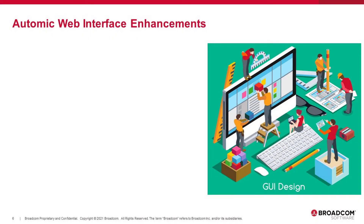Atomic Web Interface Enhancements. We continue to work with our customers to ensure the best possible user experience when working with the Atomic Web Interface, or AWI. The version 21 release sees numerous enhancements as requested by our customers, such as user settings to save your list view, column visibility, sorting order, and more. When switching views, UI layout and workflow task properties position will remain as is.